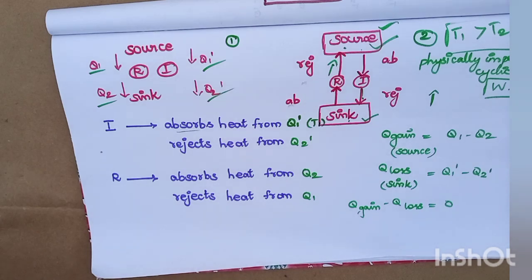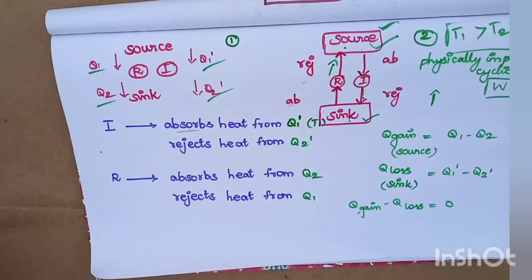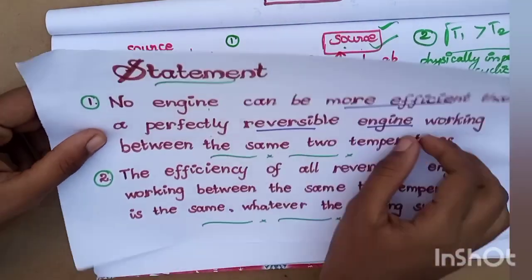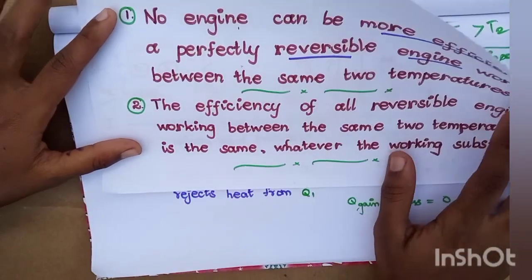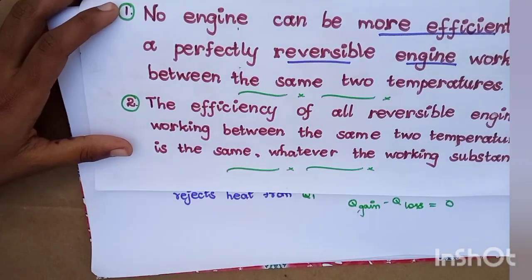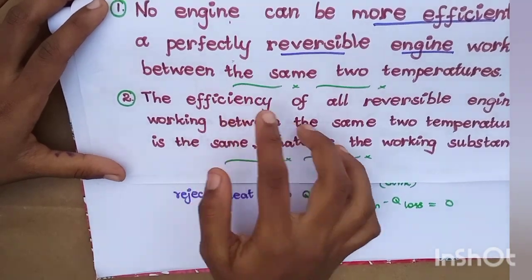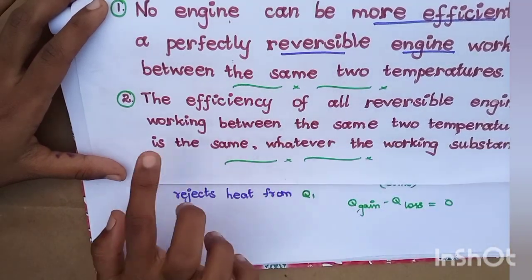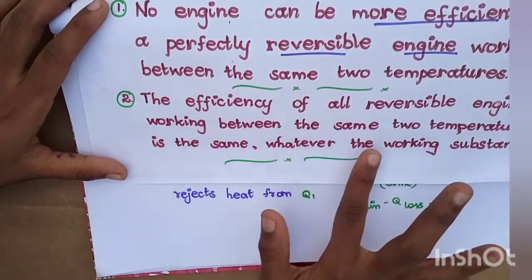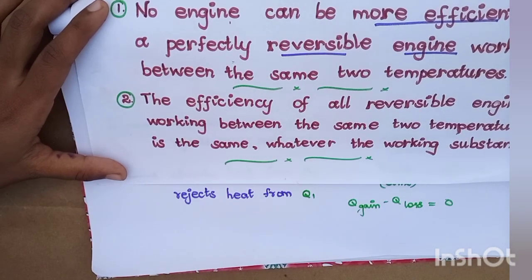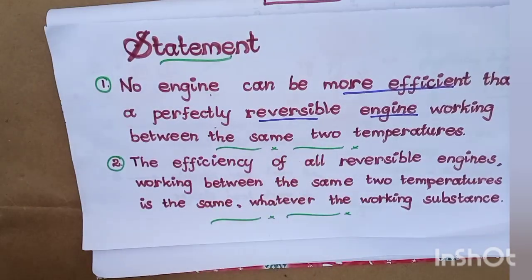Now the second part is the second theorem. In the first theorem, we have to prove that the efficiency of all reversible engines working between the same two temperatures is the same — whatever the working substance.